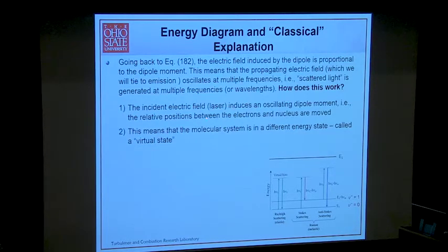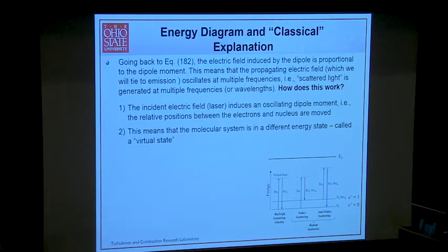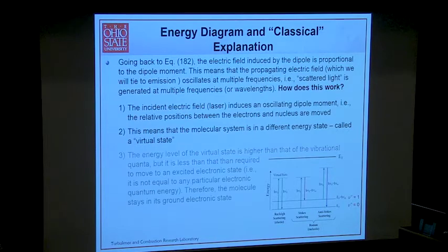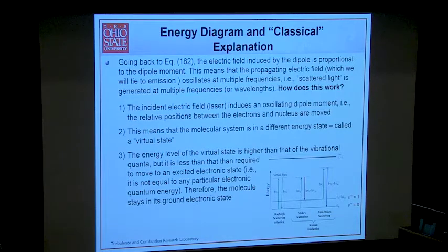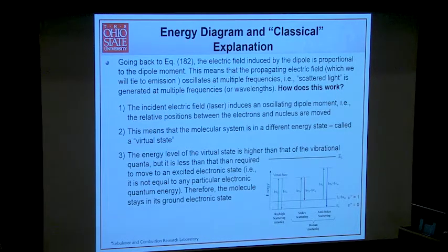The incident field induces an oscillating dipole moment — we've perturbed the electron cloud, the relative positions are moved following Coulomb's law — and the molecular system is in a different energy state than it started. This is the virtual state. The energy level of the virtual state is higher than just the next vibrational level, but much less than what's required to move to an excited electronic state. The molecule stays in its ground electronic state.